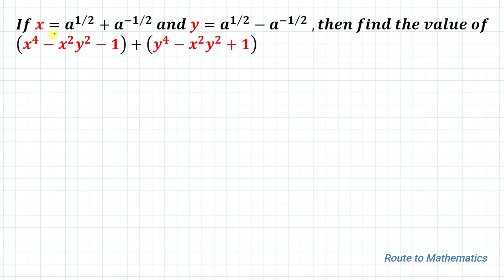The given question is: x equals to a to the power 1/2 plus a to the power minus 1/2, and y equals to a to the power 1/2 minus a to the power minus 1/2. Then find the value of x⁴ minus x²y² minus 1 plus y⁴ minus x²y² plus 1. We have been given the values of x and y and are asked to find the value of the given expression.